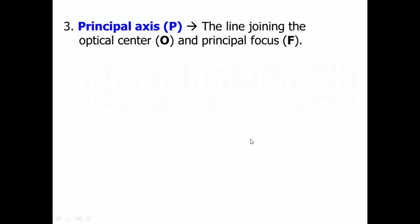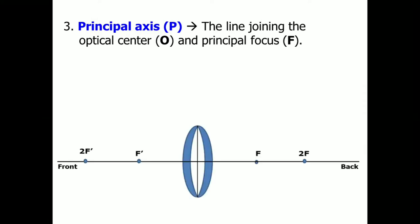The third concept is the principal axis, which is represented by a capital P. This is the line joining the optical center and the principal focus. Here in the diagram, this is our principal axis.